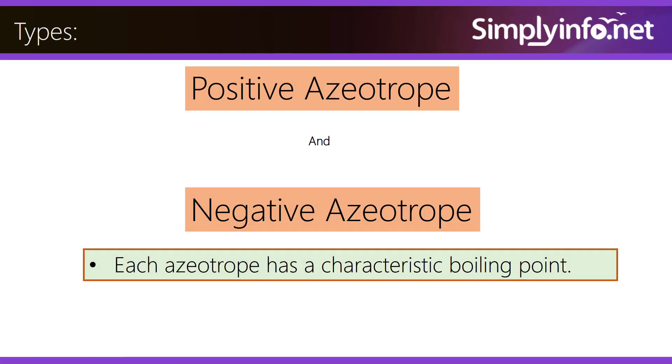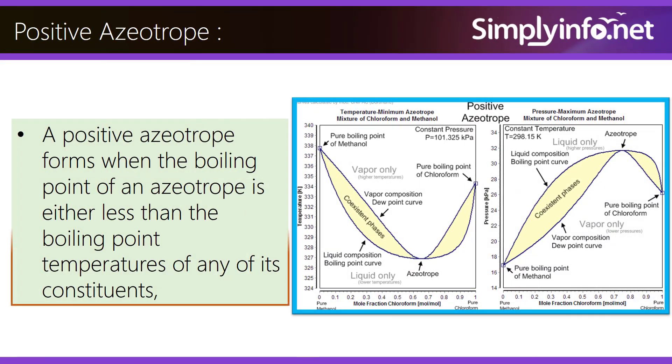There are two main types: positive and negative azeotropes. Each has a characteristic boiling point. A positive azeotrope forms when the boiling point of the mixture is less than the boiling point of any of its constituents.